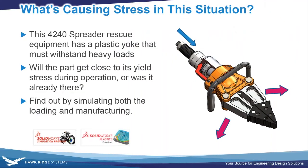Let's put ourselves in an engineering situation. What's causing the stress in the situation we're looking at on the screen? You may have seen the model on the right-hand side before. This is a product called a 4240 Spreader manufactured by a company named Pulmotrail, done in SolidWorks several years back. It's a piece of rescue equipment similar to the Jaws of Life, used to save people's lives and get them out of damaged buildings or cars.